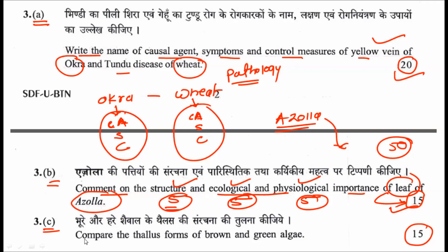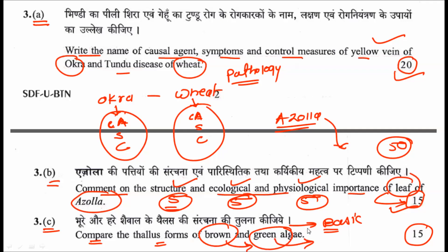The third sub-question asks you to compare the thallus form of brown algae and green algae. This is a basic question — you compare the thallus of both groups, describing their characteristic features. You will get 15 marks for this.